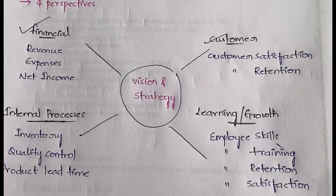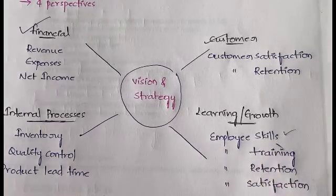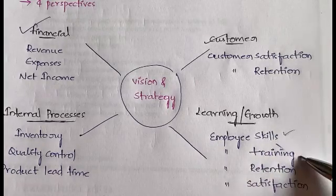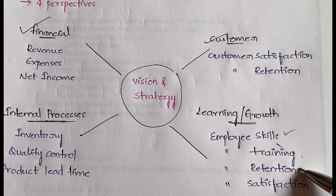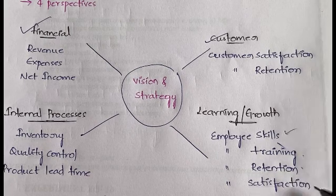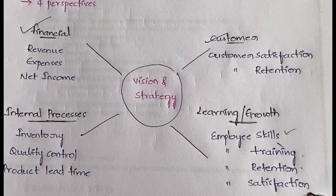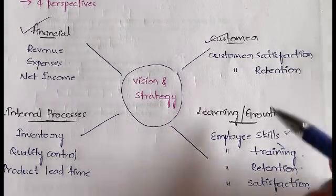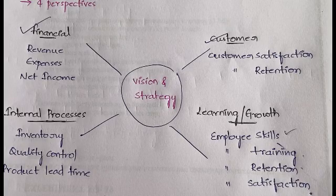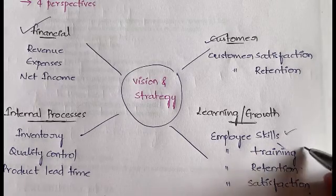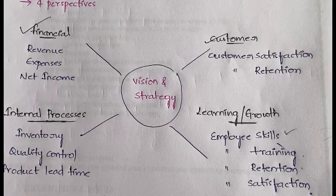The next is Learning and Growth, which is related to employees in the organization. This includes developing employee skills through training opportunities, retaining employees by giving hikes, bonuses, and added benefits, and ensuring employee satisfaction through good physical working conditions. All of these are related to employee skills, training, retention, and satisfaction.